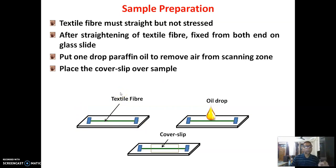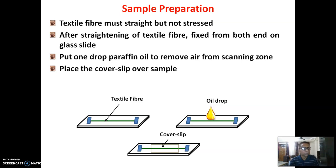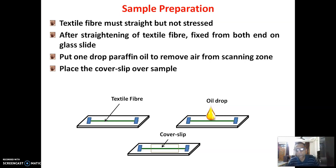A very small drop of paraffin oil is placed on the fiber and then the cover slip is placed over it. The purpose of the paraffin oil is to remove air between the glass slide and the cover slip. If air remains, light would pass through glass, then air, then glass again, causing dense-to-rare-to-dense refraction and preventing a clear picture of birefringence.